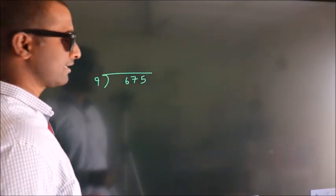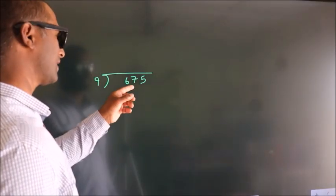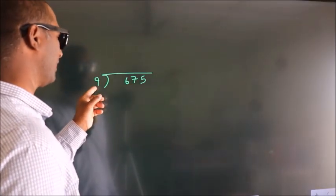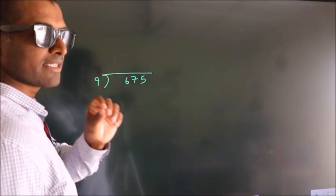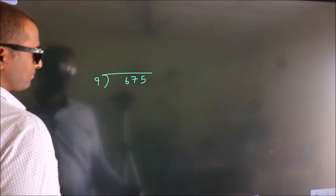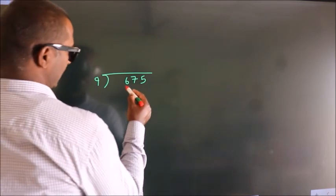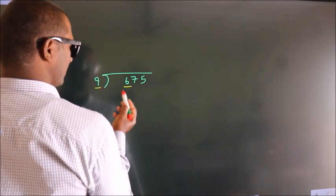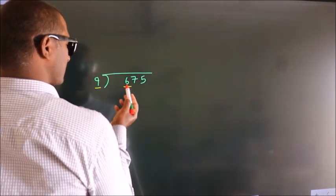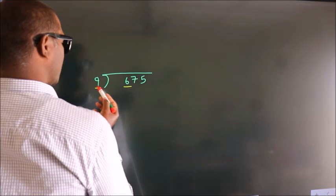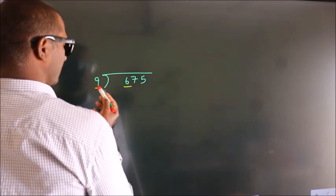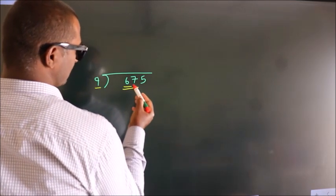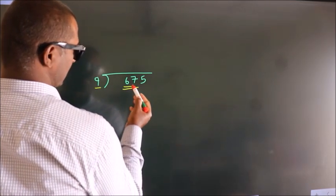How to divide 675 by 9? See, here we have 6, and here 9. Since 6 is smaller than 9, we should take two numbers: 67.